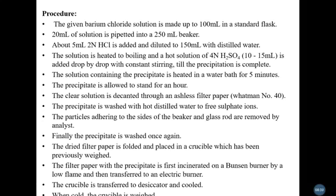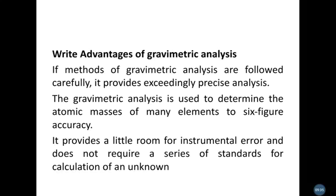The procedure involves using a standard flask, adding the defined volume, then heating and boiling, cooling, adding the precipitating agent, and allowing the precipitate to stand for five to ten minutes. Then cool and allow precipitation to stand for hours. Filter using Whatman filter paper number 40 to 42, wash the precipitate with an uncontaminated solvent, then use a filter paper and electric burner to separate filtrate and precipitate. Finally, desiccate, cool the crucible, and weigh.